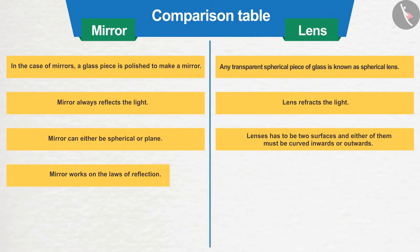Number 4: Mirror works on the laws of reflection, whereas lens works on the laws of refraction.